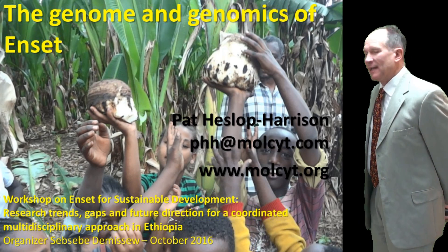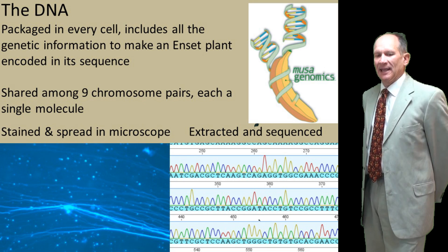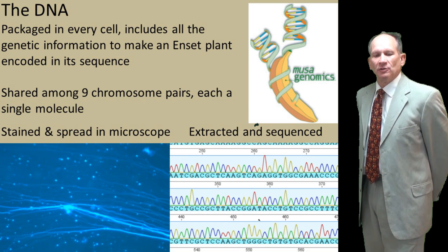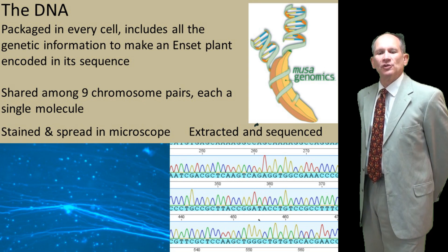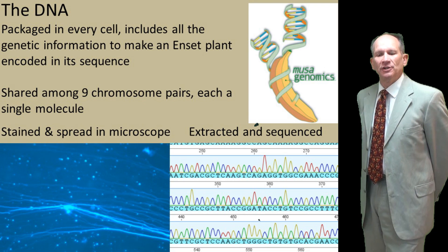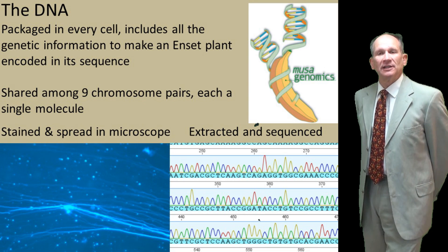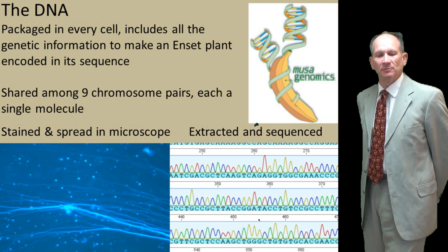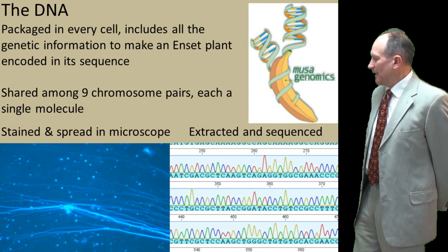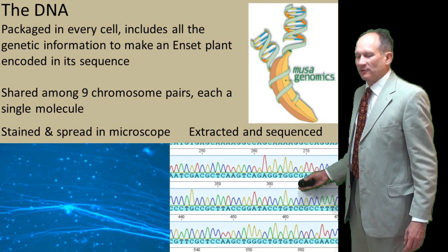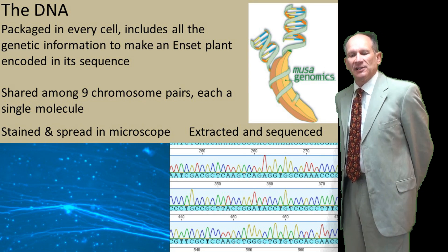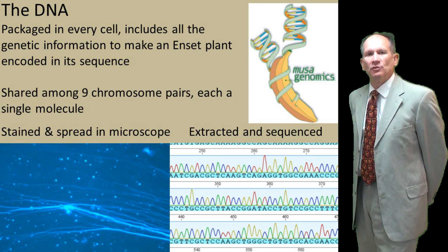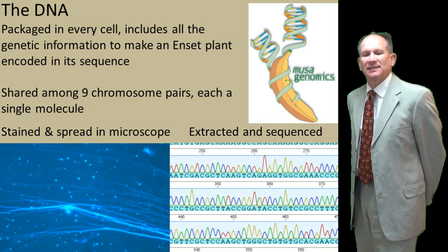So what then is the DNA? Well, the DNA is packaged into every cell of the nucleus and includes all of the genetic information to make the plant, encoded in its sequence, and that's shared among different chromosomes. Here we can see it stained in the microscope, and the DNA sequence — the sequence of the letters A, T, G, and C — that encode all of that information.